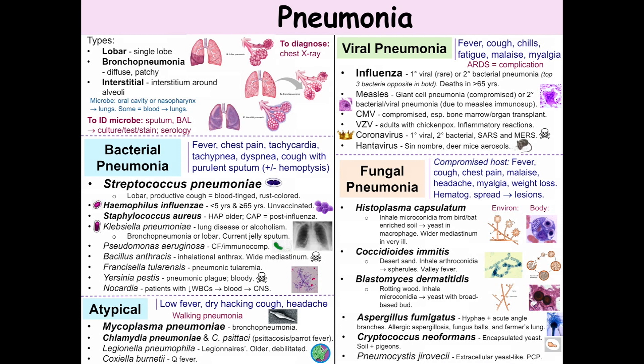Chlamydia are obligate intracellular bacteria that can't make ATP. They have a unique biphasic life cycle: elementary bodies are taken into the cell, where they convert to reticulate bodies, replicate, then convert back to elementary bodies. The cell lyses, releasing elementary bodies. Because it's obligate intracellular, it's typically grown in McCoy cells, but not all labs are equipped to do this. It typically causes bronchitis and mild atypical pneumonia, and chest radiographs may show patchy infiltrates.